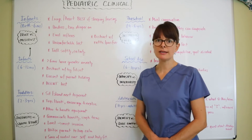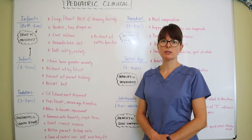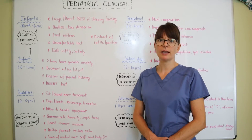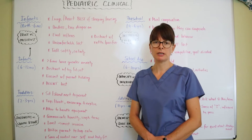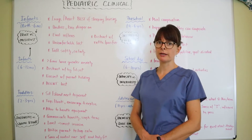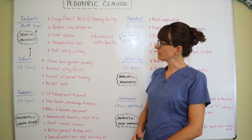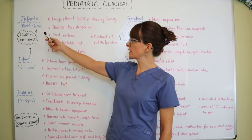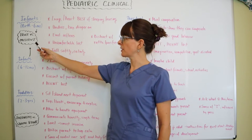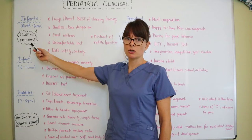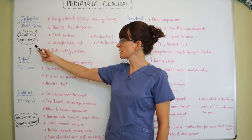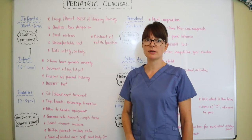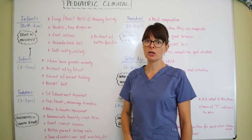We always have to take into account the different developmental levels and ages of the pediatric population. Starting out with infants from birth to six months old, they're in Erikson's stage of trust versus mistrust and their trusted person is always their parent or caregiver.